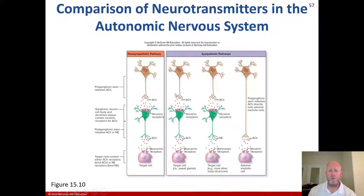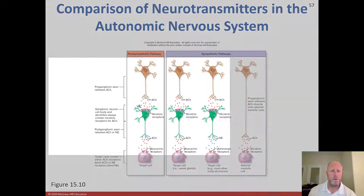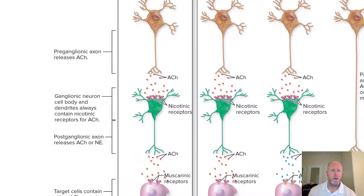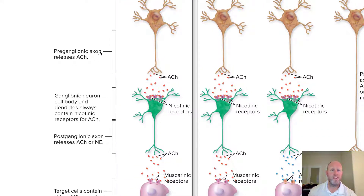Acetylcholine is always playing a role first. In the parasympathetic pathway, we have the preganglionic axon, which releases acetylcholine, and the ganglionic neuron cell body — the dendrites always contain nicotinic receptors for acetylcholine.